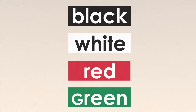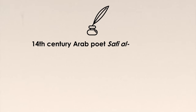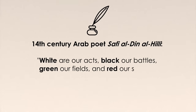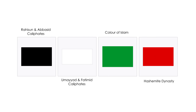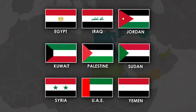It is said that the four colors also derived their potency from a verse by 14th century Arab poet Safi al-Din al-Ili: "White are our acts, black our battles, green our fields, and red our swords." Whether or not these historical references were the effective cause for the choice of the colors, they inarguably represent them today.